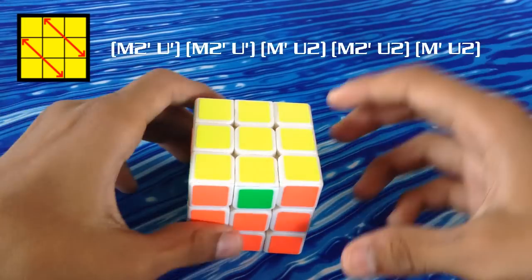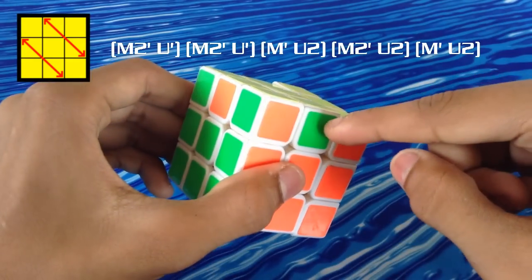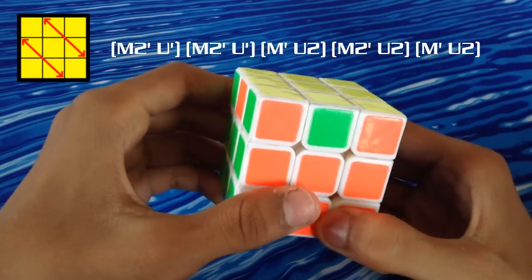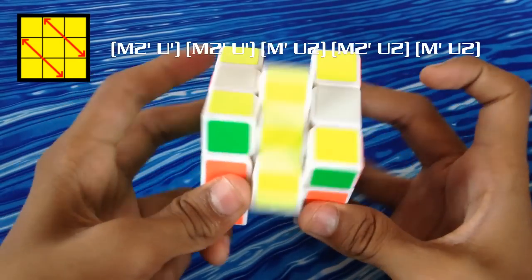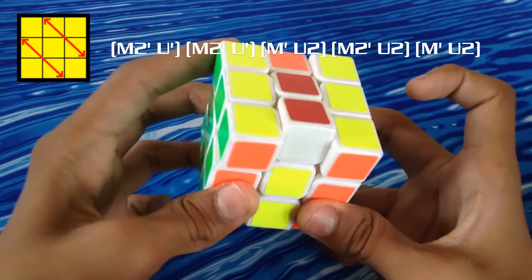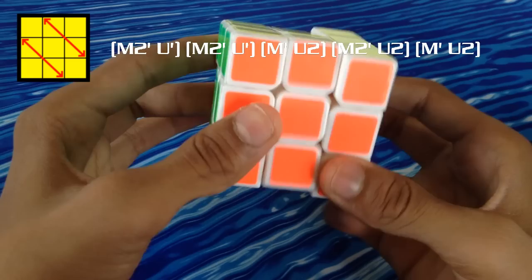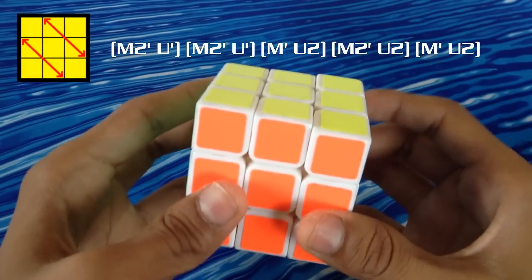At number 4 we have the Z-perm. This is easily recognizable because this and these are exchanged and so are these. You have to keep them in this orientation and apply this algorithm. While I'm doing the M moves as you can see I'm using this finger and when it's applied pretty fast it looks like this.